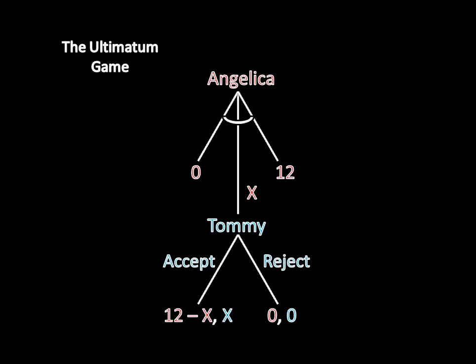That gave us this extensive form, and we concluded that Angelica offers Tommy one cookie in equilibrium and gets to keep the other 11 for herself.